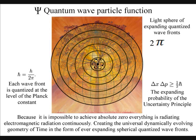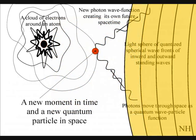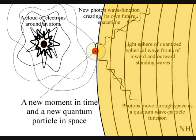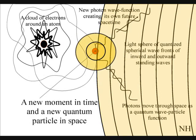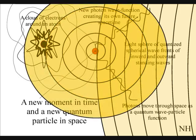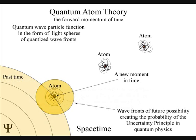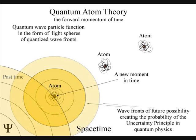Each expanding wavefront will create a probability of a future event. When a wavefront comes in contact with another atom, a photon or quantum of energy will be absorbed. This will create a new moment in time that will be part of Einstein's curvature of space-time. There will then be a quantum leap of energy, creating a new wave function of future probability.